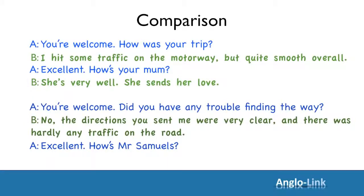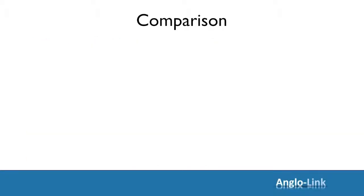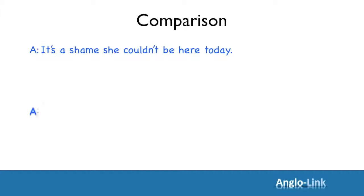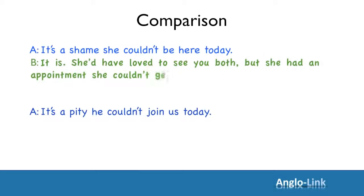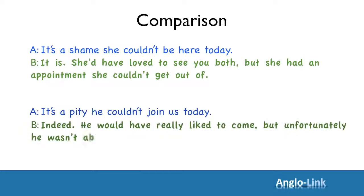Informal: 'She's very well. She sends her love.' Let's put that in a formal context: 'He's very well. He sends his regards.' Looking at the next section. Informal: 'It's a shame she couldn't be here today.' Let's make that more formal sounding: 'It's a pity he couldn't join us today.' Informal: 'It is. She'd have loved to see you both, but she had an appointment she couldn't get out of.' Formal: 'Indeed. He would have really liked to come, but unfortunately he wasn't able to rearrange his schedule.'